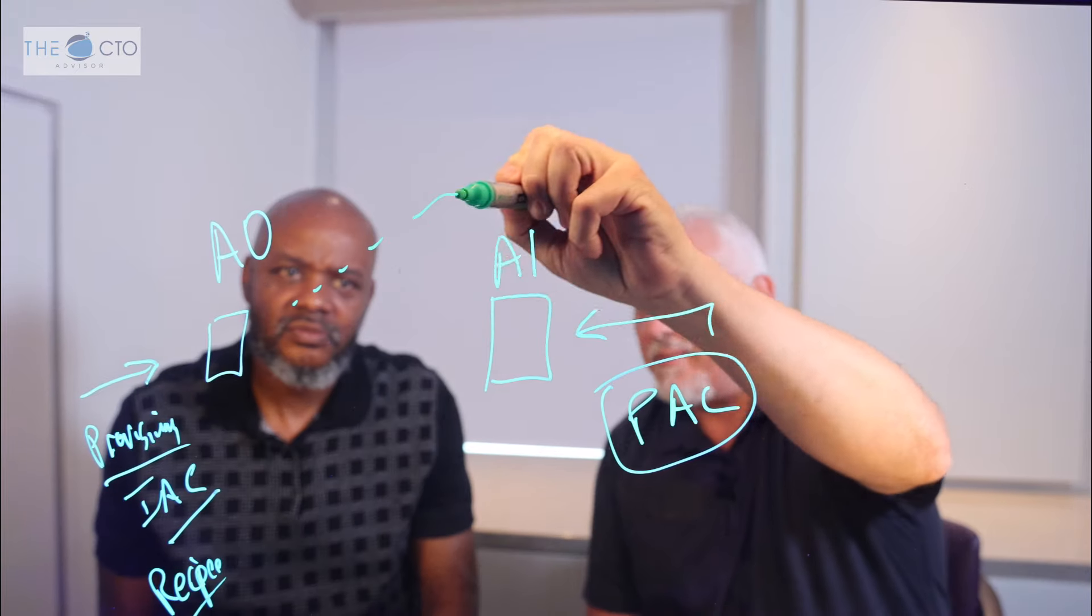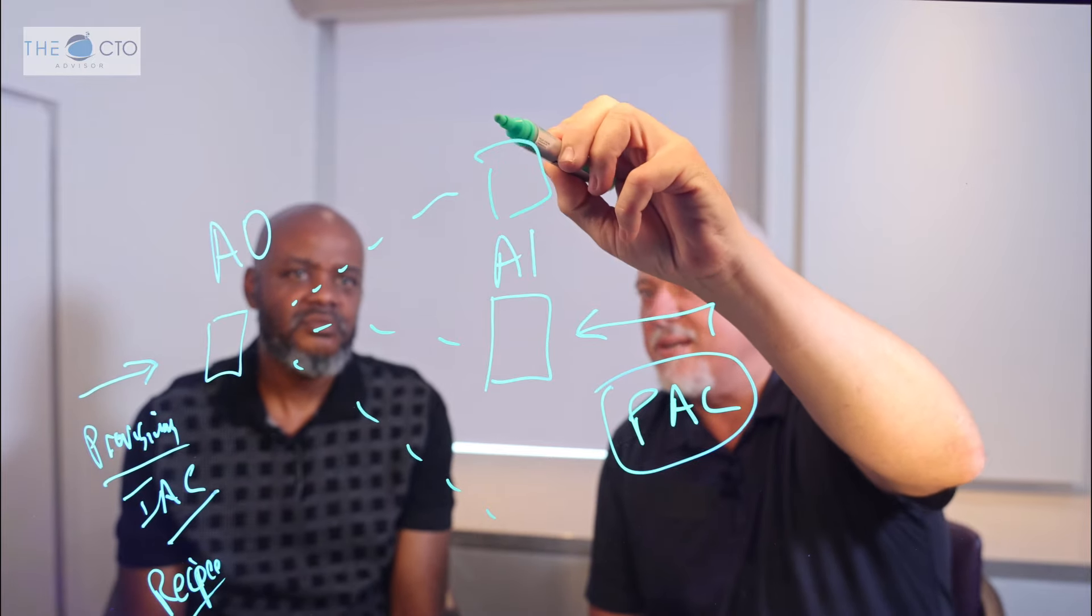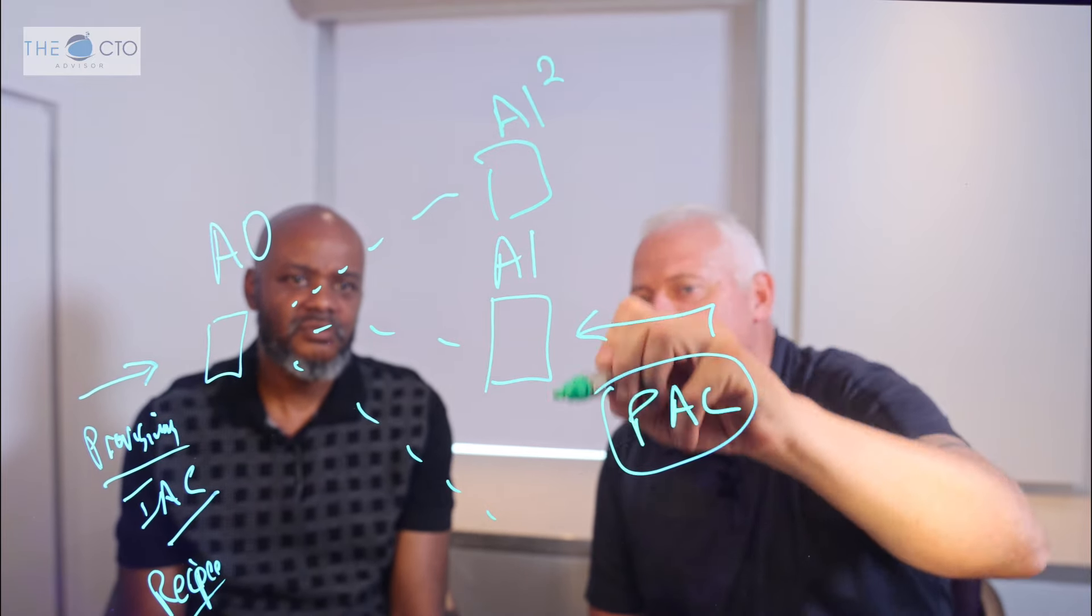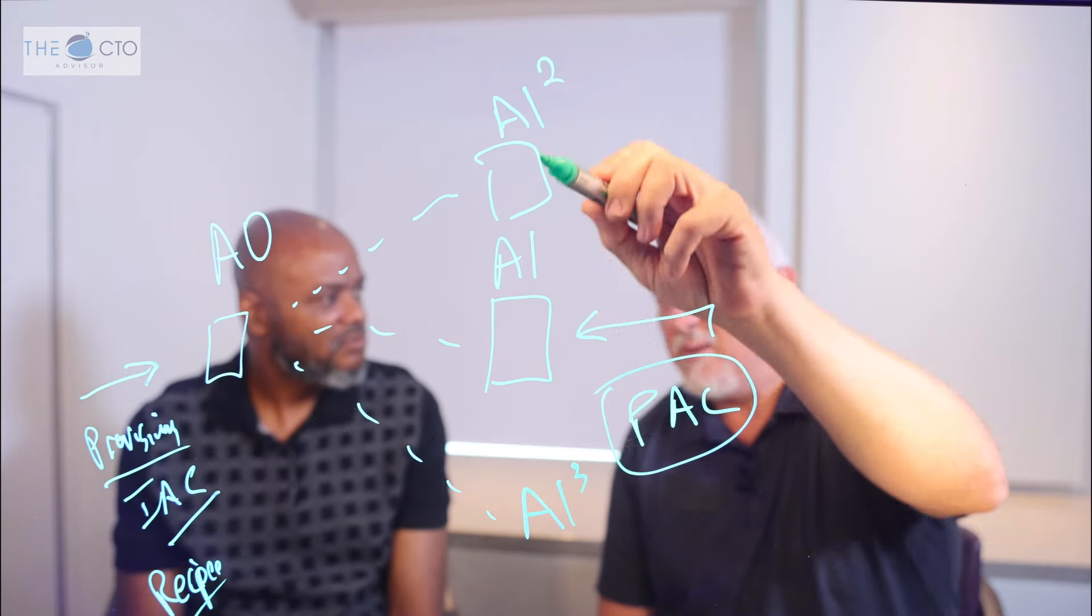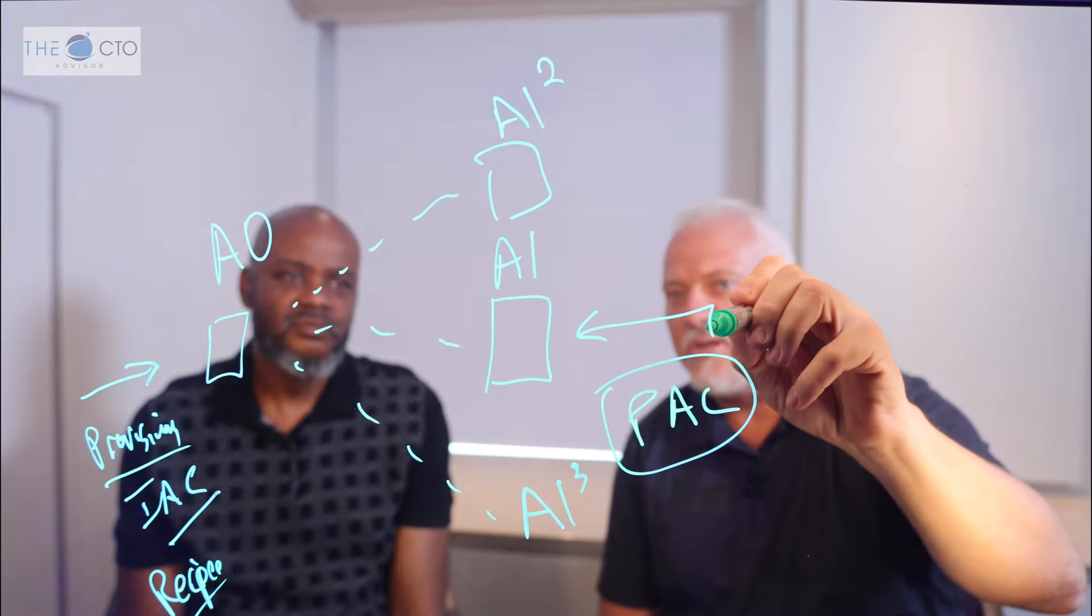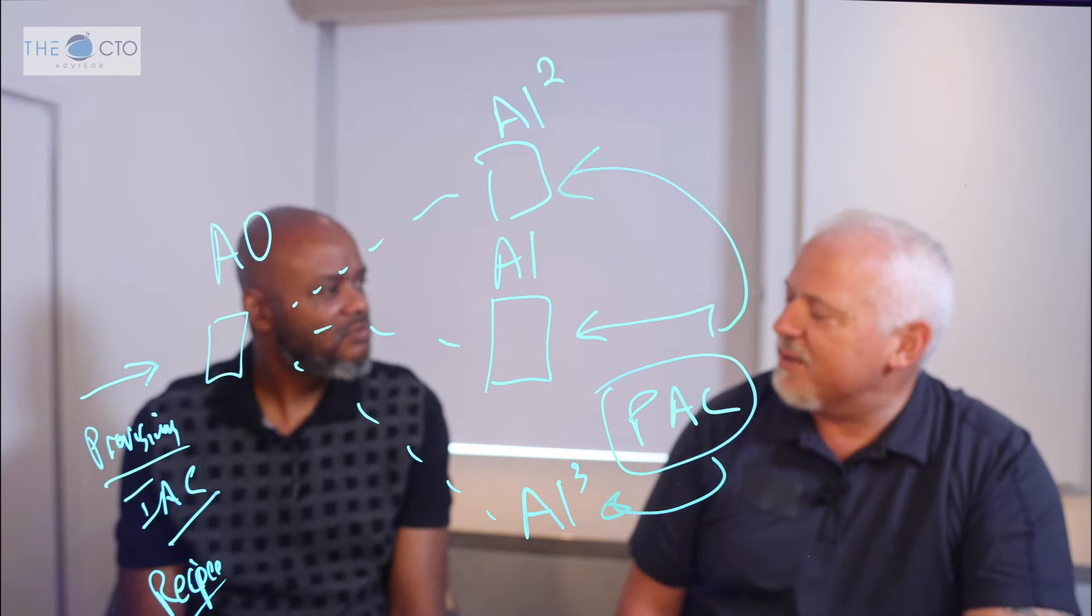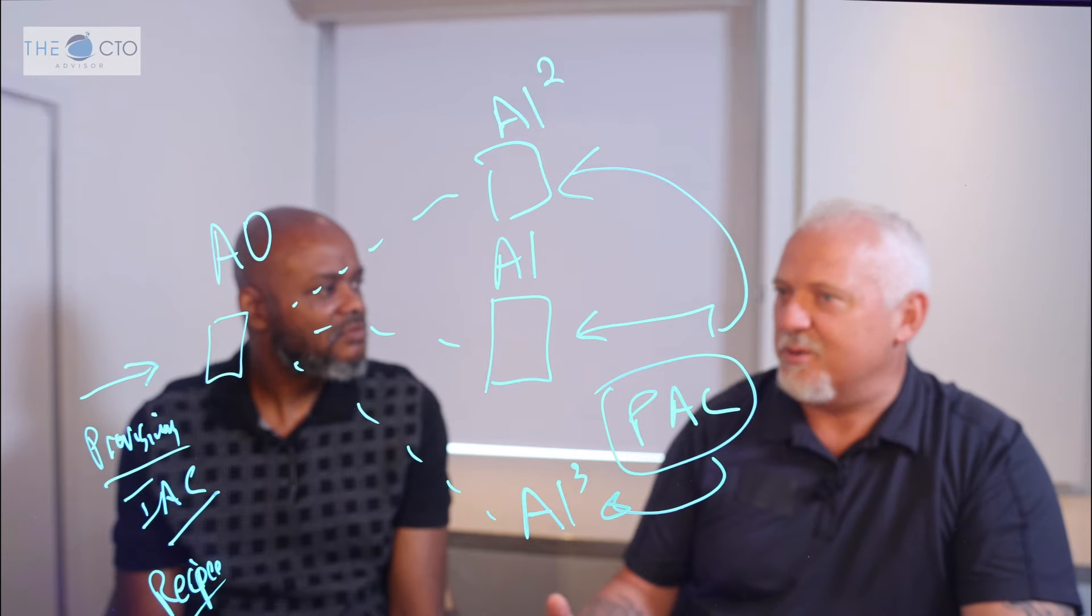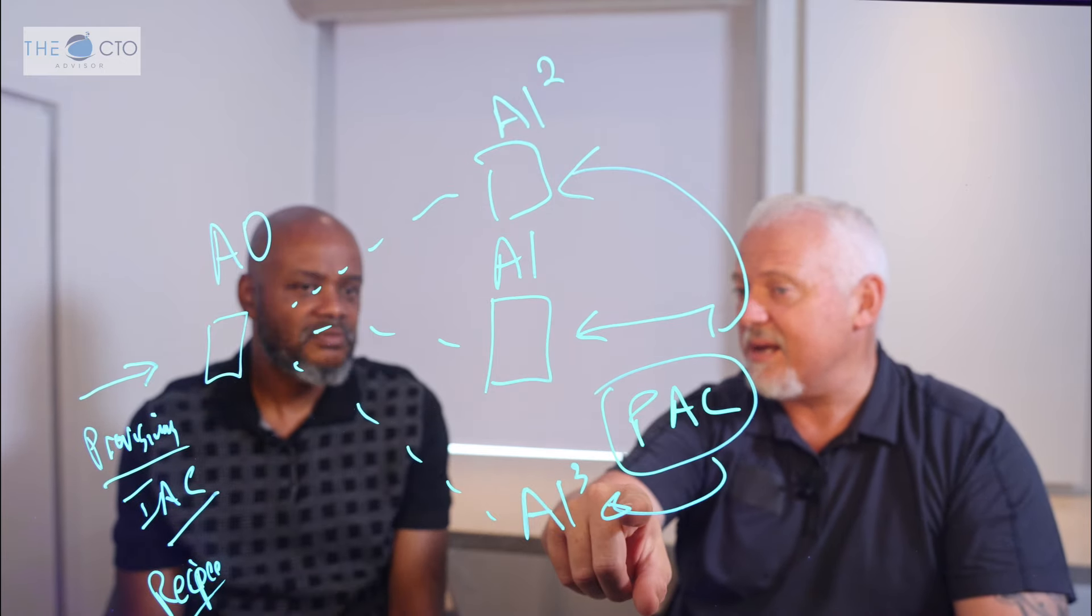So you can set an A2 and A3 and say, look, I now can put this in many multiple environments and I can still use governance PAC on it to make sure that all the right rules are being held up to. Is it going right? Is the recipe maintained? Did it do the right thing?